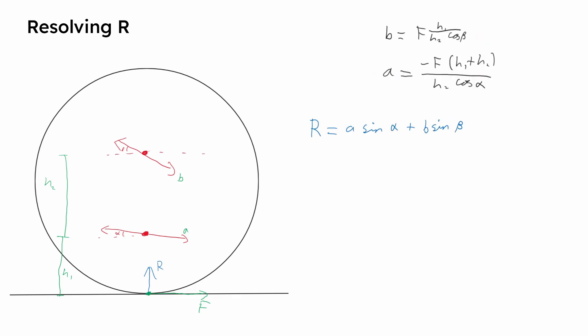As with the horizontal forces, the vertical forces sum to zero. As A and B are both known, R can be found relatively easily, and then factorised into the bottom equation.